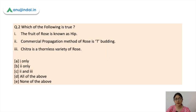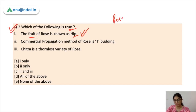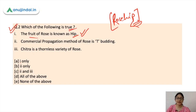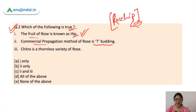Question number two is: which of the following is true? The first statement is the fruit of rose is known as hip — this one is correct. You may have heard of rose hip oil used in cosmetics for skin rejuvenation or hair oil. So the fruit of rose is known as hip. The second statement is: the commercial propagation method of rose is tea budding.